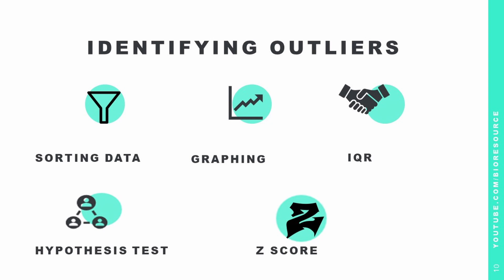The interquartile range (IQR) measures the dispersion of data points between the first and third quartile marks. The general rule is that a data point is an outlier if it is over 1.5 times the IQR below the first quartile, or 1.5 times the IQR above the third quartile. Outliers can also be identified using hypothesis testing.